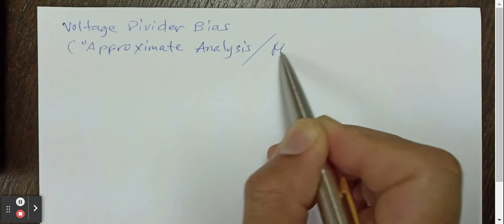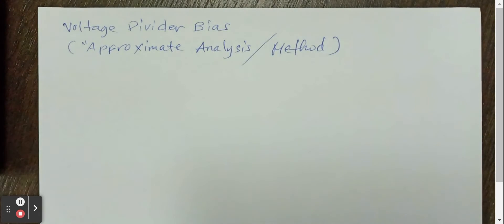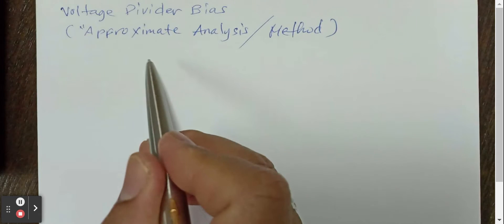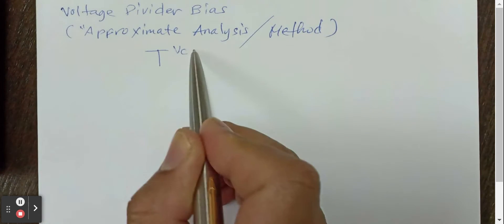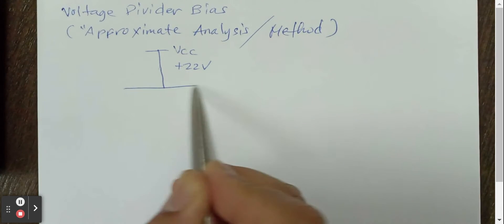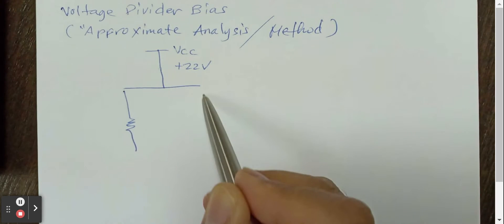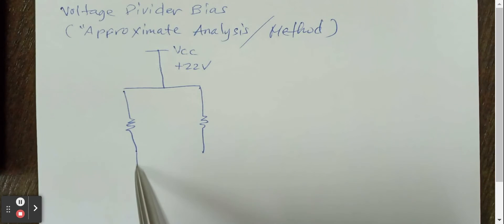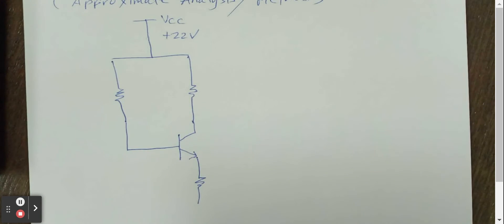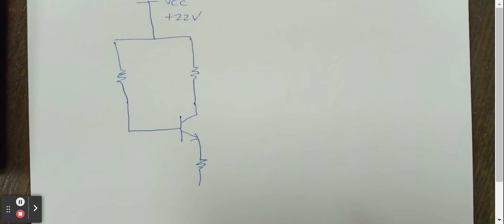Or we call it approximate analysis or approximate method. So in this kind of biasing for NPN transistor, we have a common voltage source, which is the VCC. Let's say this is positive 22 volts. And then we are connecting here a resistor and another resistor here. Just the same with what we did in the previous video, where we used the same circuit, but using the exact method. So this is the ground. And we have another resistor here, which is connected also to the ground.